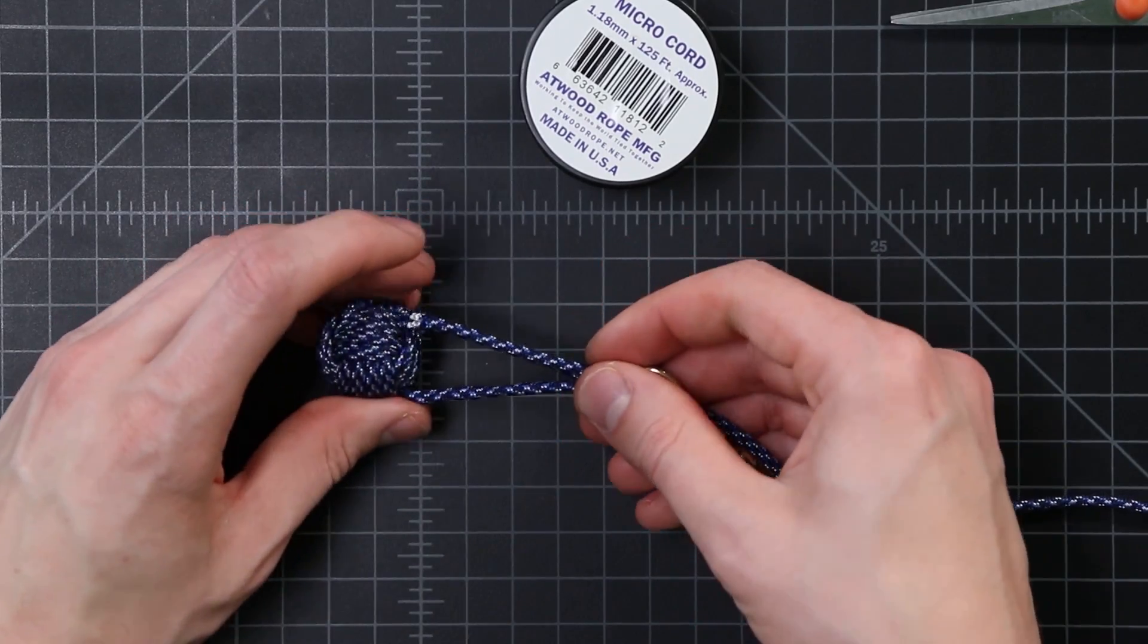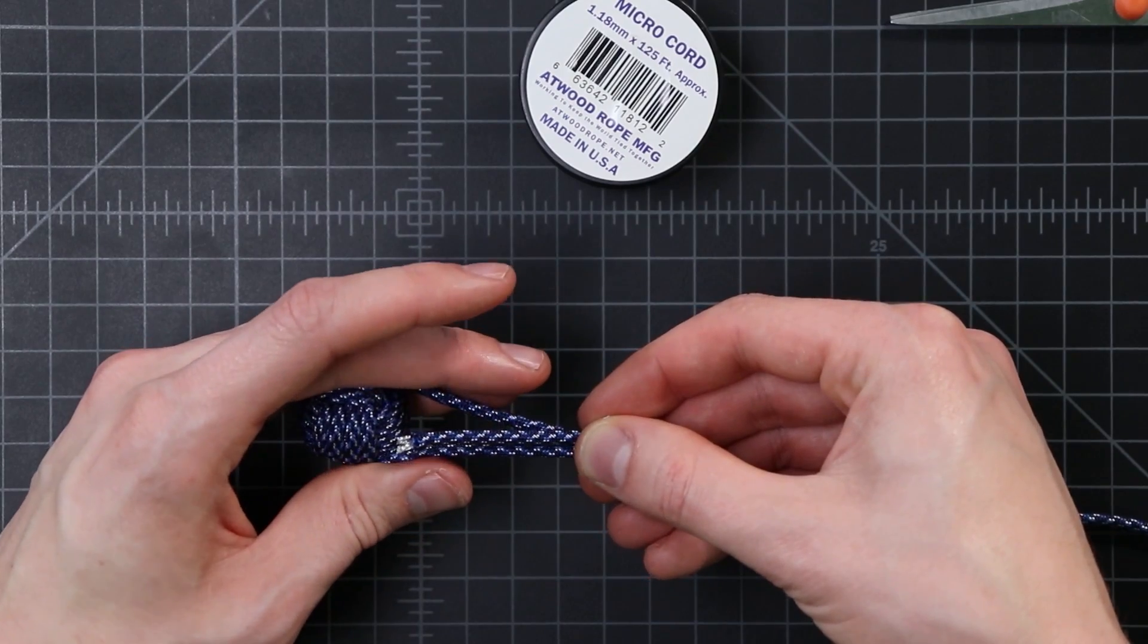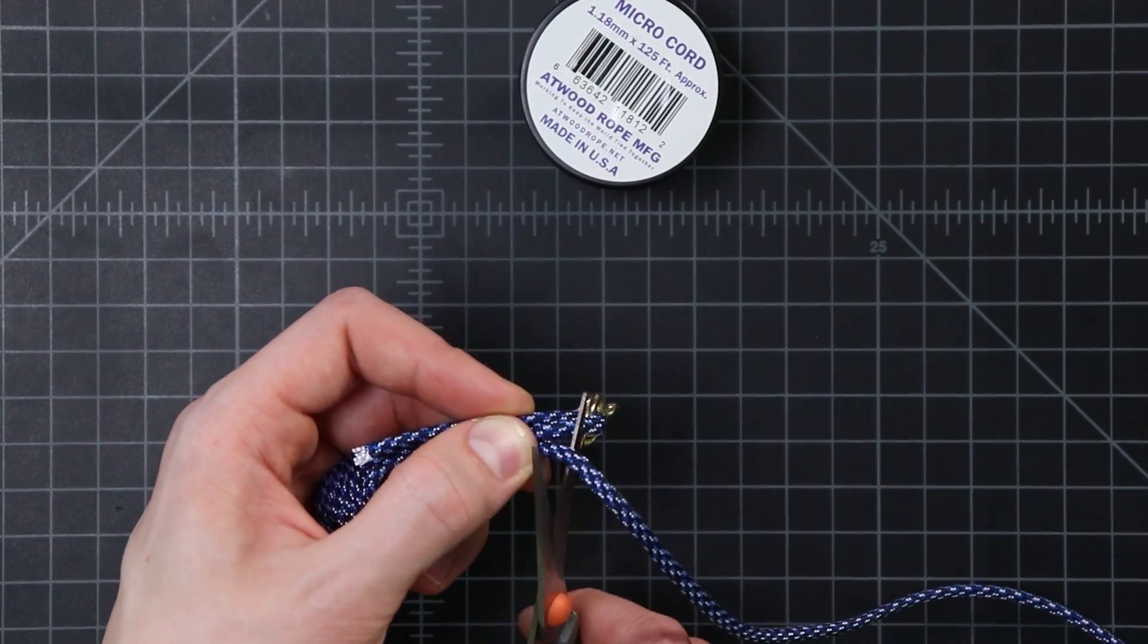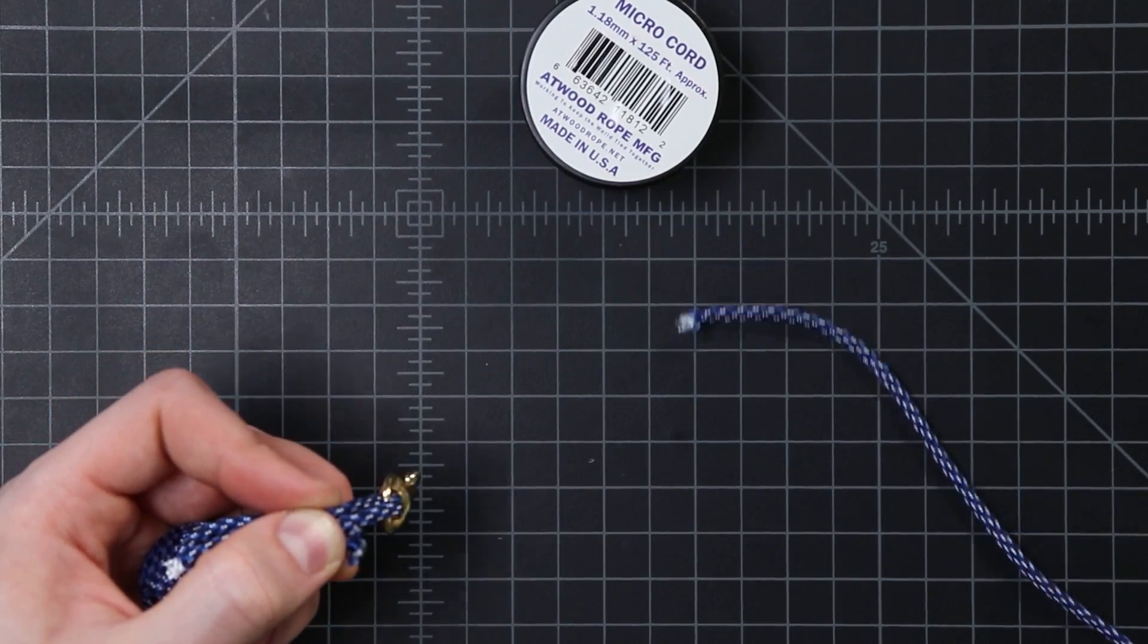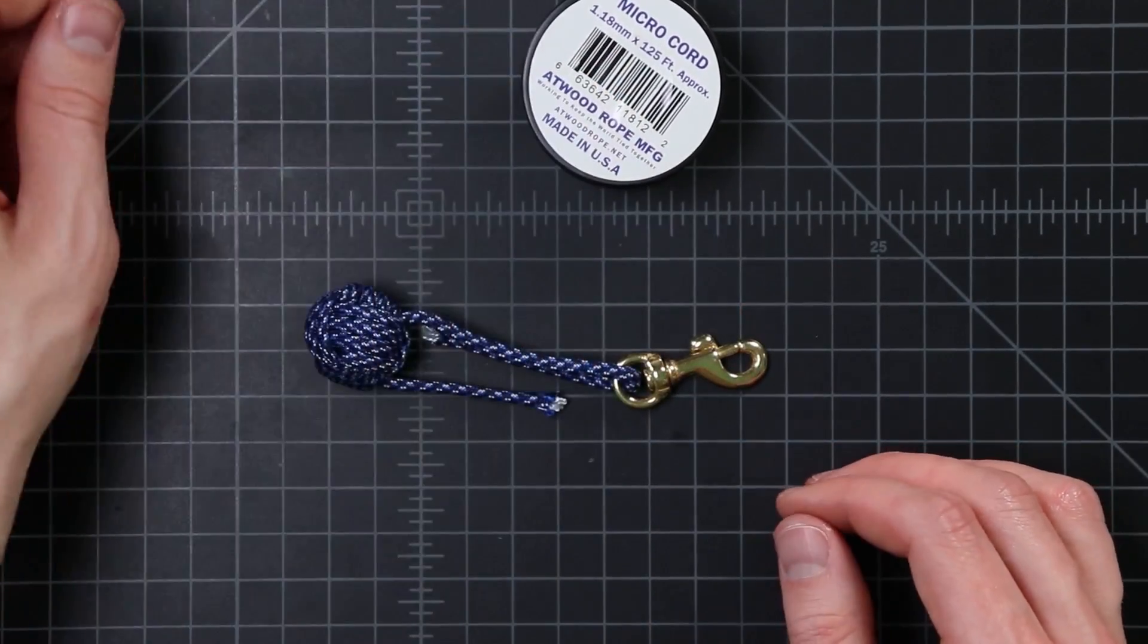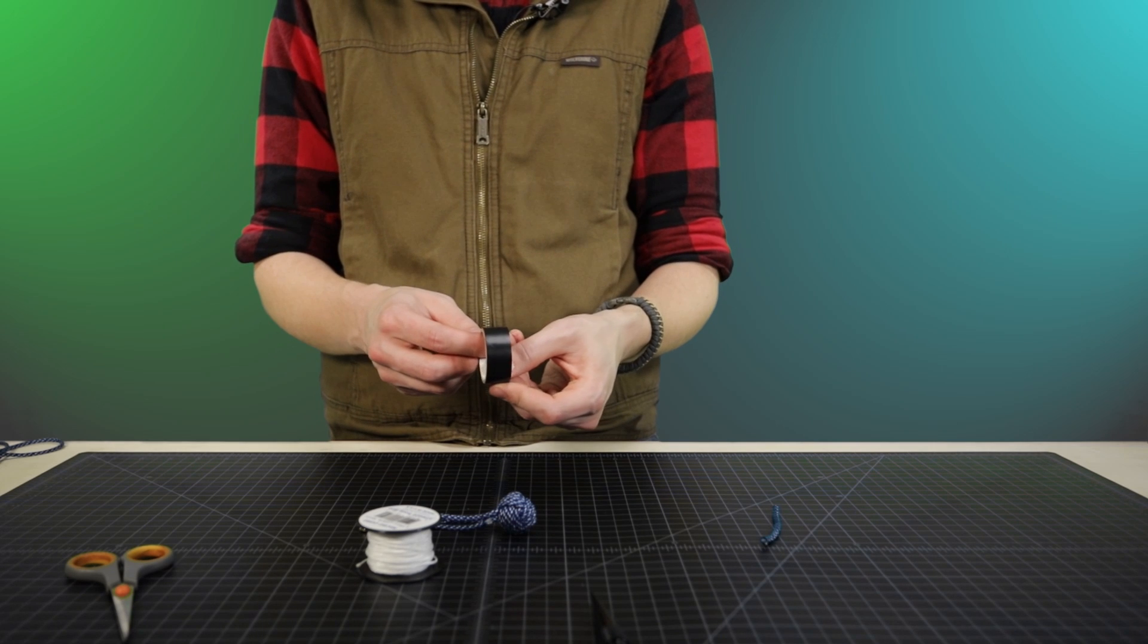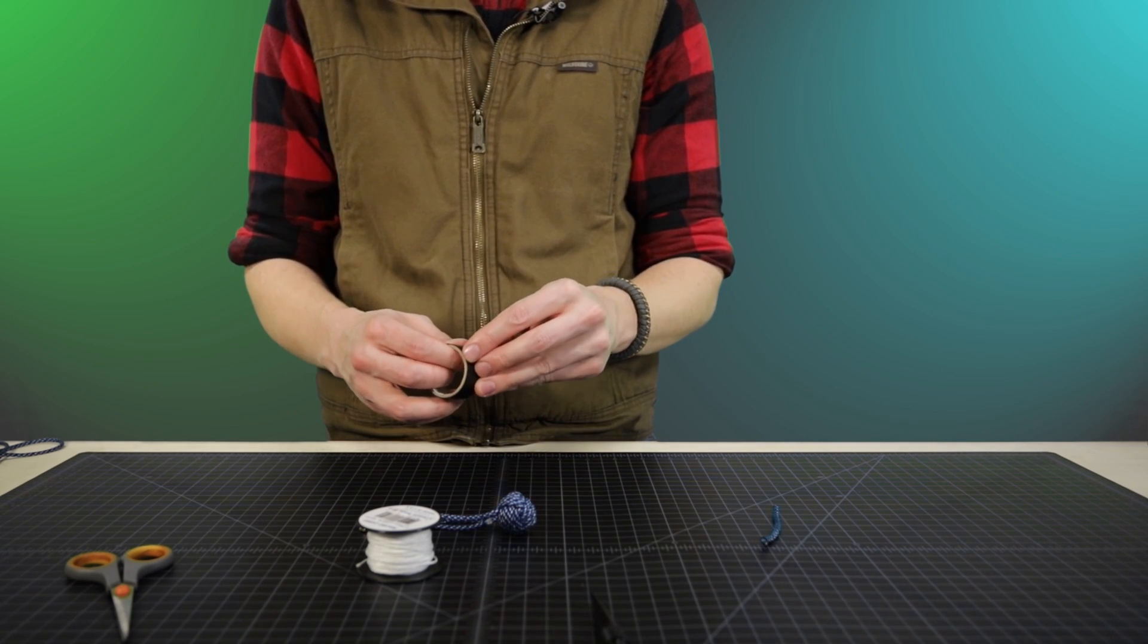If you're not sure how long to cut them, cut them a little bit long because you can always trim them down later. But you can't make them longer. And this gets a little bit tricky to hold onto while you're wrapping the micro cord. So I'm going to use a little bit of electrical tape. If you're averse to using tape on a paracord project, that's totally fine. And you can do it without it. But this is going to make it easier.